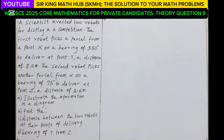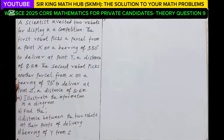To your request now: the scientists invested two robots for this period under a condition. The first robot picks the parcel from a point X on a bearing of 350 degrees to deliver at another point Y.